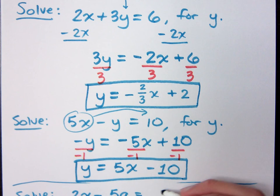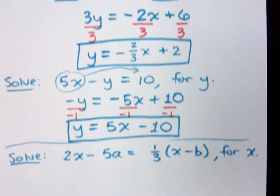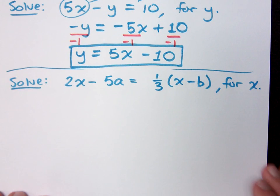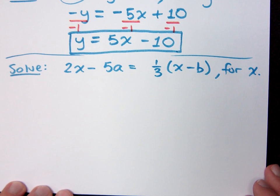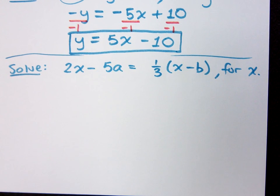2x minus 5a is equal to 1 third the quantity x minus b. I want to solve this guy for x. Now, there's something here that I'm sure you guys don't like. What is it? The fraction. But you know what? You can get rid of the fraction. Can't you?